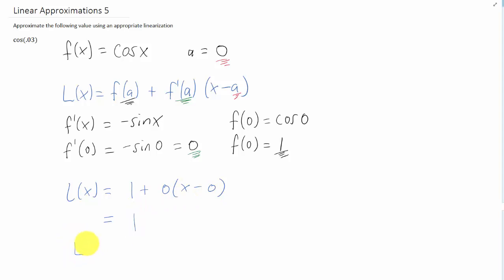So in some sense, this problem turns out to be slightly unsatisfying. What we want to do is we want to now plug the appropriate x value into our linearization. That would be L of 0.03 in this case. Of course, we don't have an x in this linearization to plug that into. So the answer is just 1.